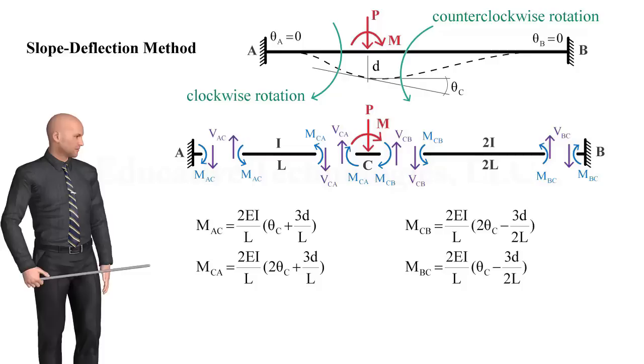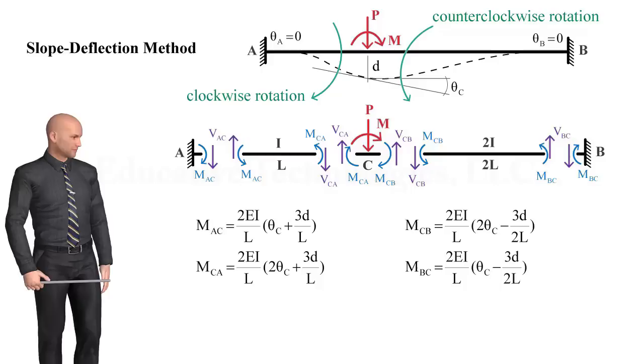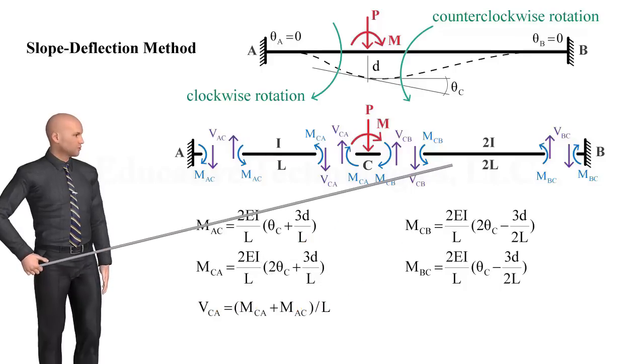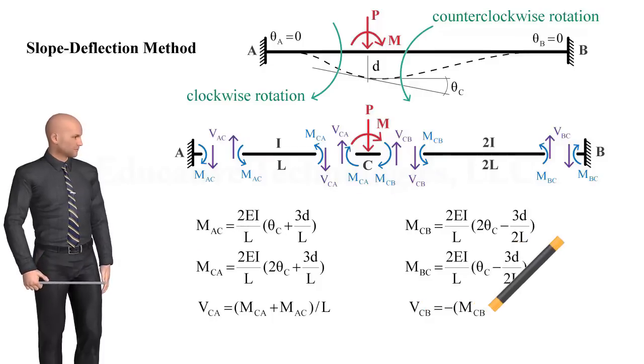For example, using a free-body diagram for segment AC, VCA can be written as... And using this free-body diagram, VCB becomes... Now consider joint C.